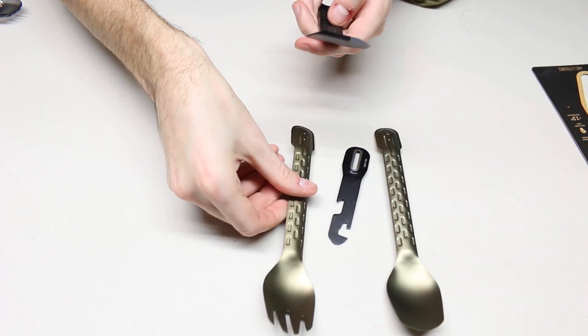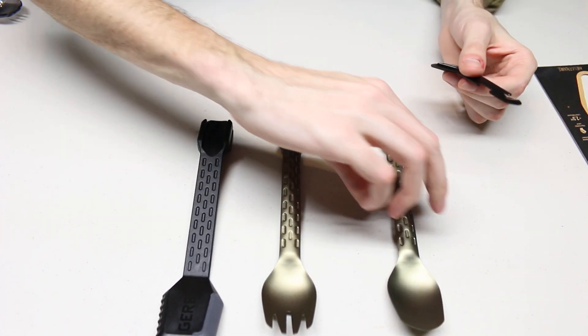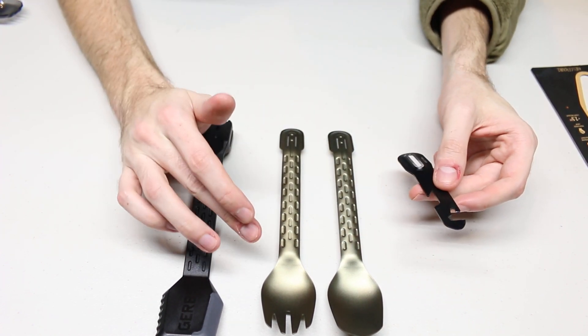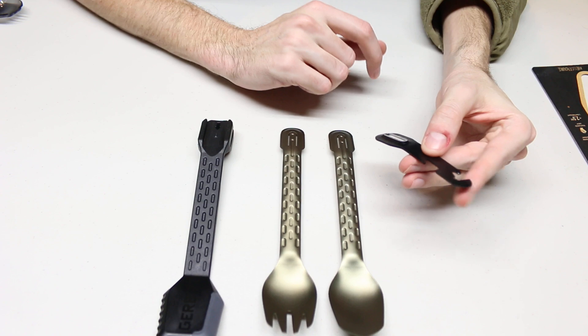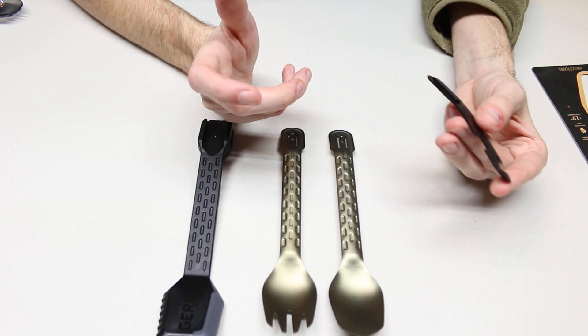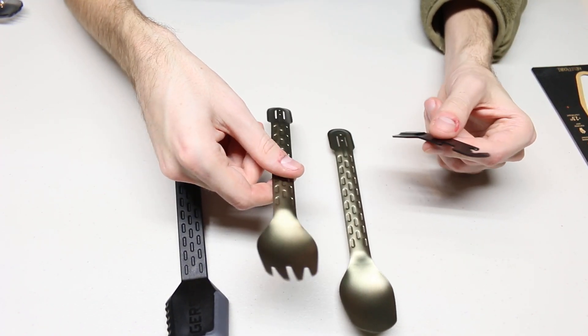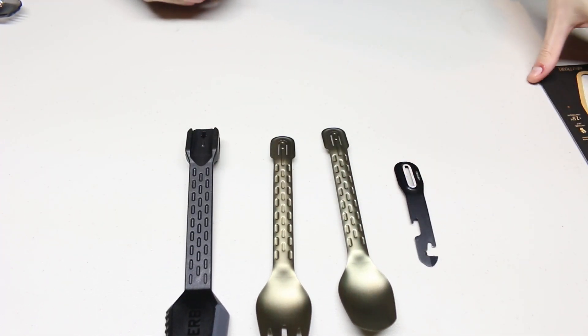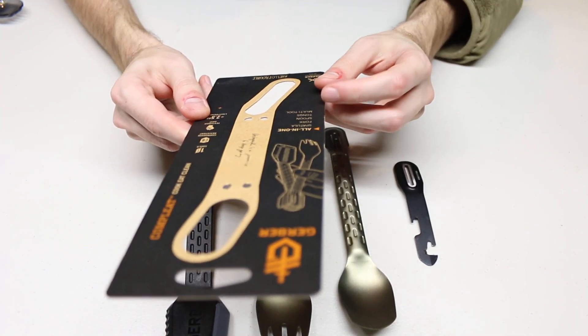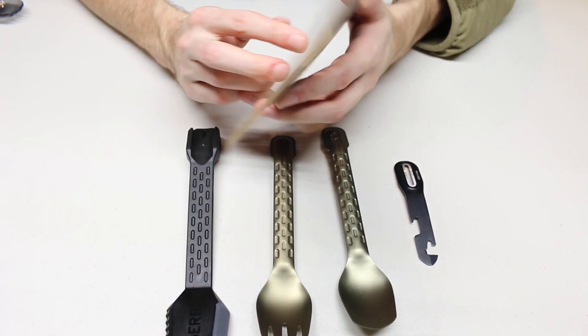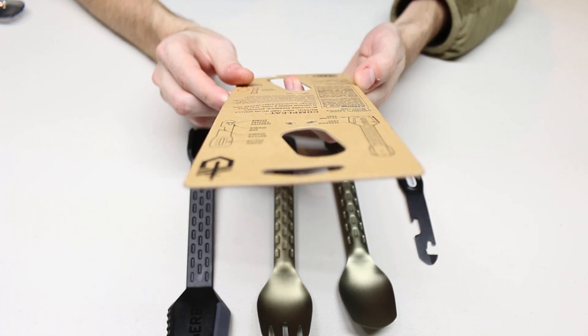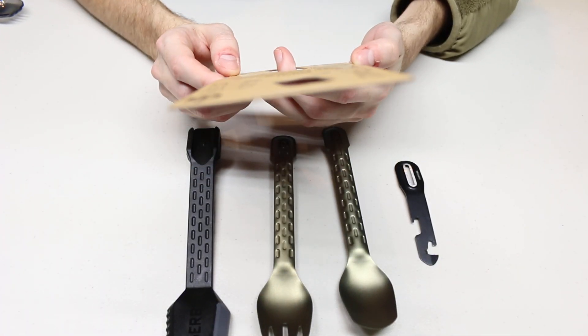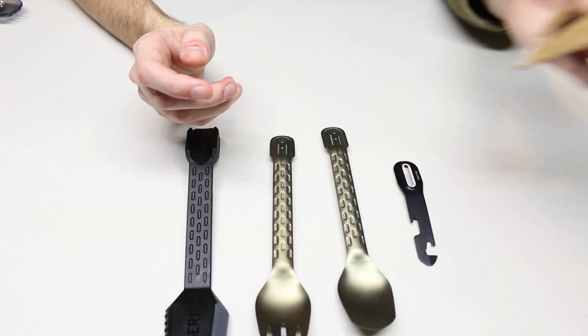That is the Gerber Complete. I believe they did come out with another thing called the Gerber Devour, which was a spork, as well as had a multi-tool with an actual kickstand, I believe, so that your utensils did not touch the ground or the table. It does come with a 25-year warranty, which is nice.